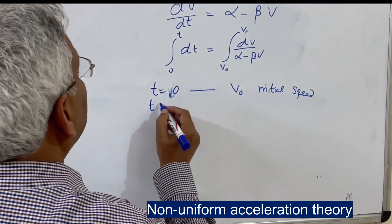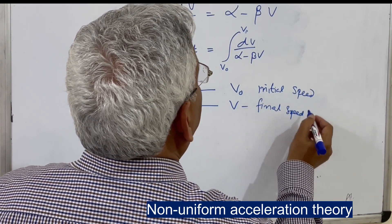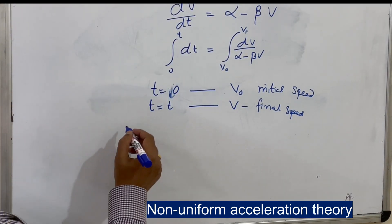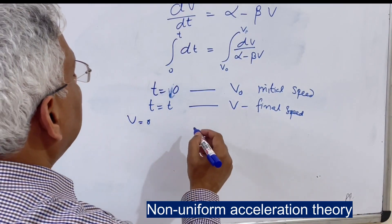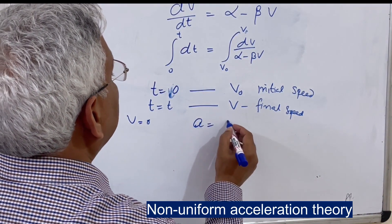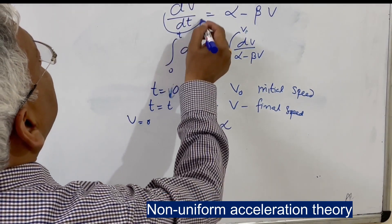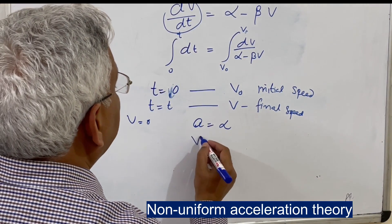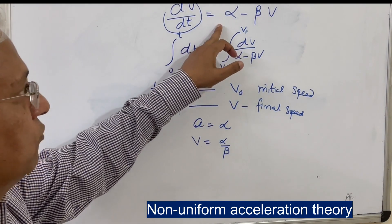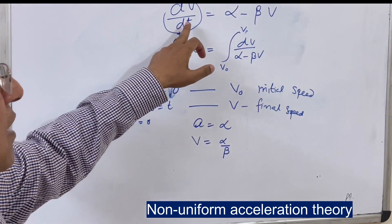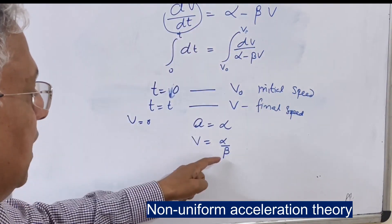At t = 0, the speed is v₀ (initial speed), and at time t, the speed is v (final speed). There are two boundary conditions: when v = 0, the rate of acceleration is maximum and equals α (i.e., dv/dt = α). When acceleration equals zero (dv/dt = 0), the speed is maximum, and that maximum speed is α/β.